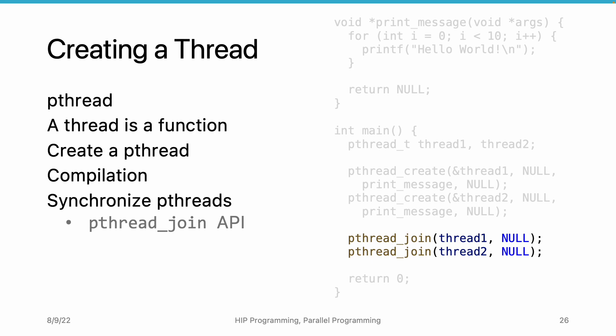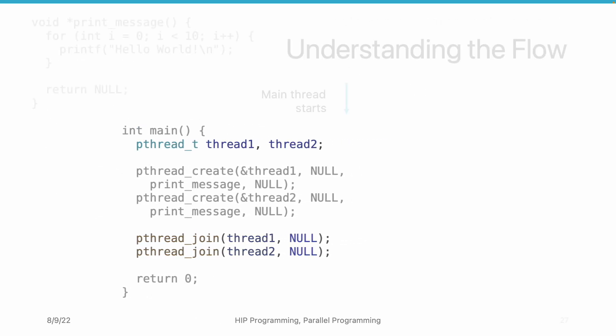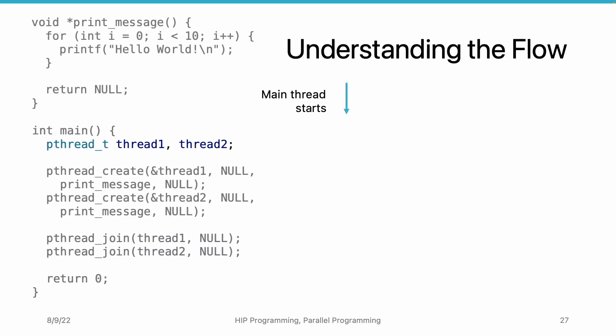Now we have walked through the whole program that creates two threads, executes them in parallel, and waits for the threads to complete. I want to go through the example again, but from another perspective. This analysis can help you understand the flow of the program.